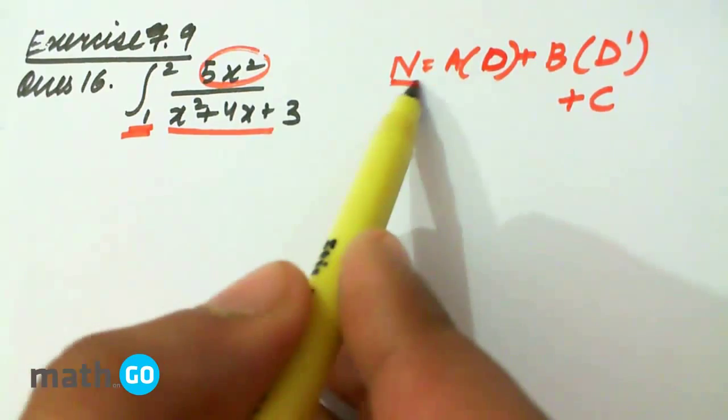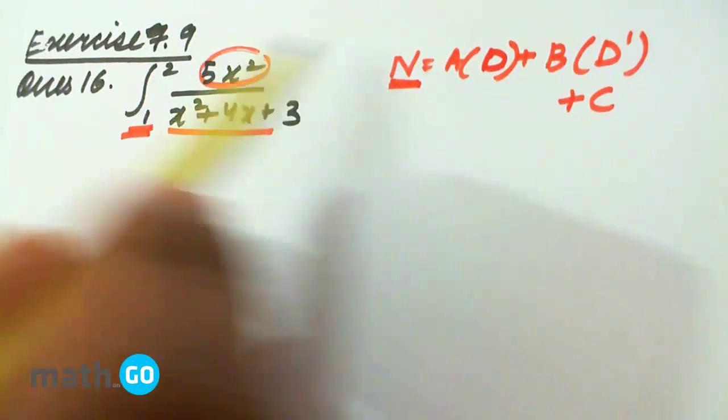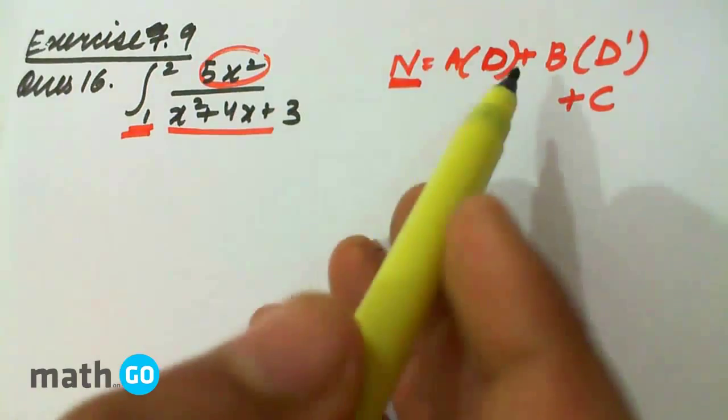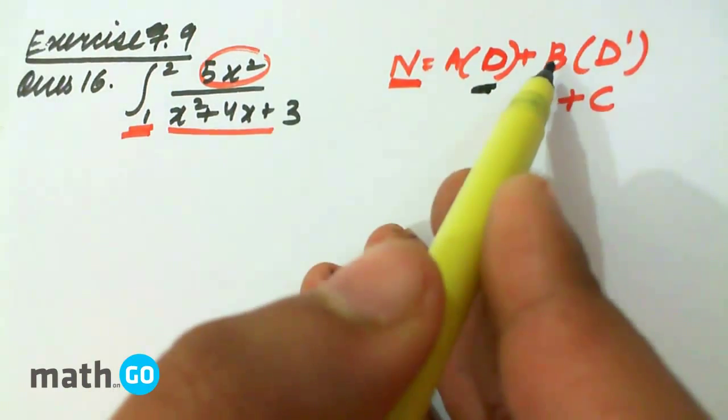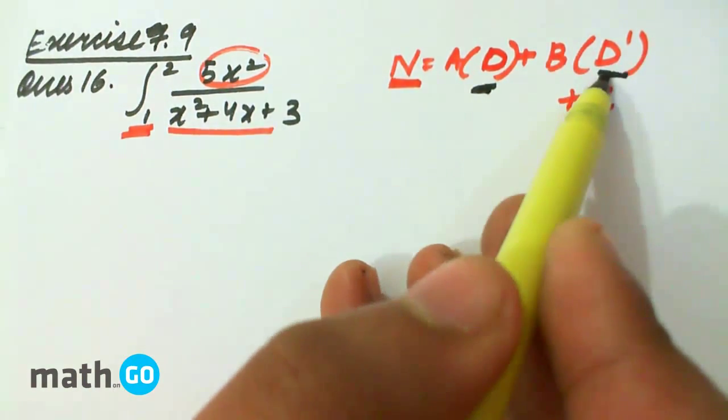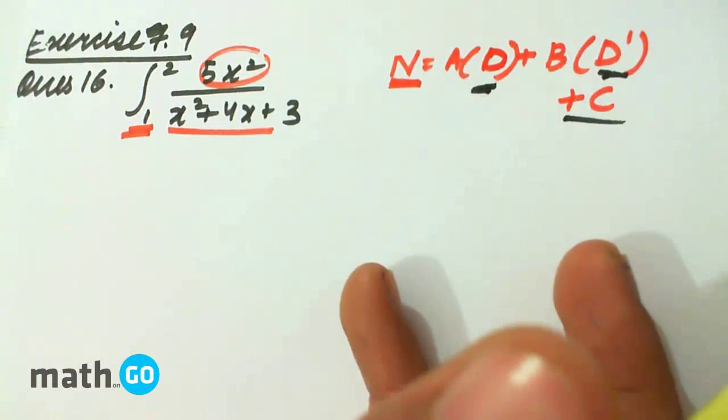We represent the numerator as some constant, that is A, into the denominator, plus another constant B into the derivative of the denominator, plus C.